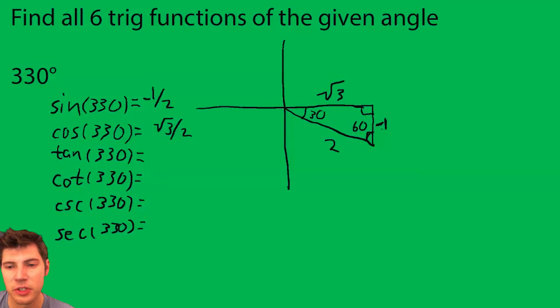Tangent is opposite over adjacent, so it's negative 1 over root 3. We can't have the root 3 in the denominator, so we multiply top and bottom by root 3. We end up with root 3 over 3 and it's still negative.